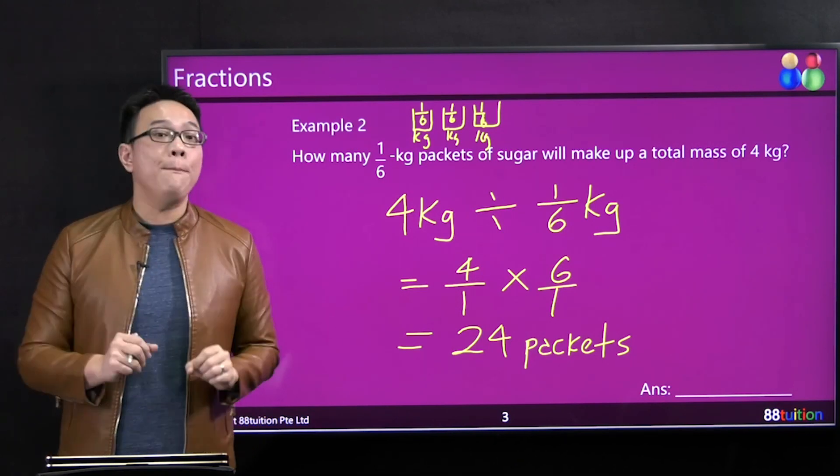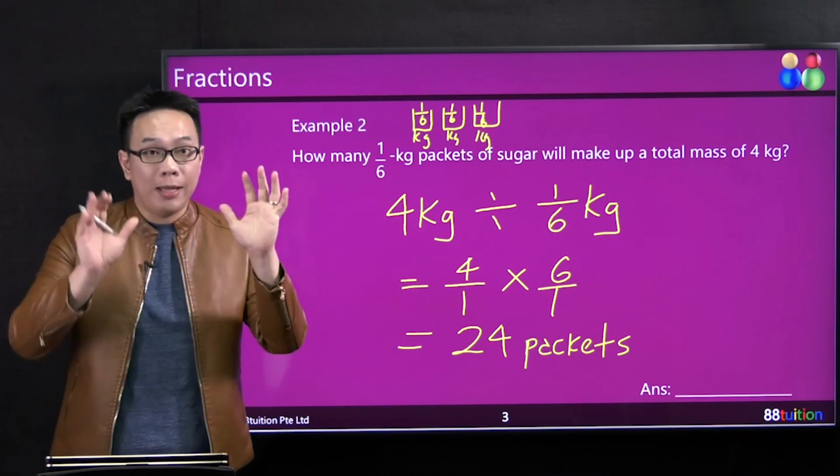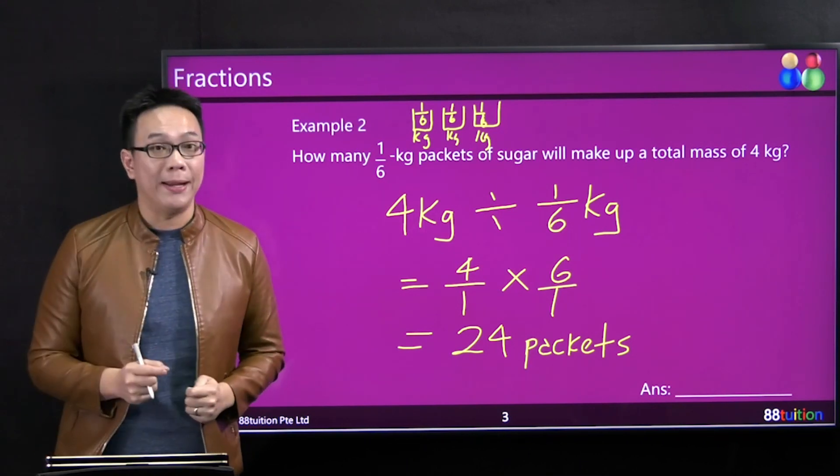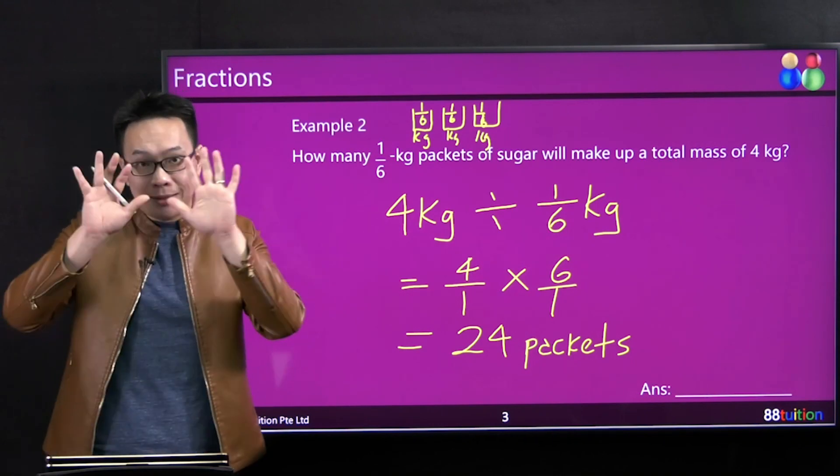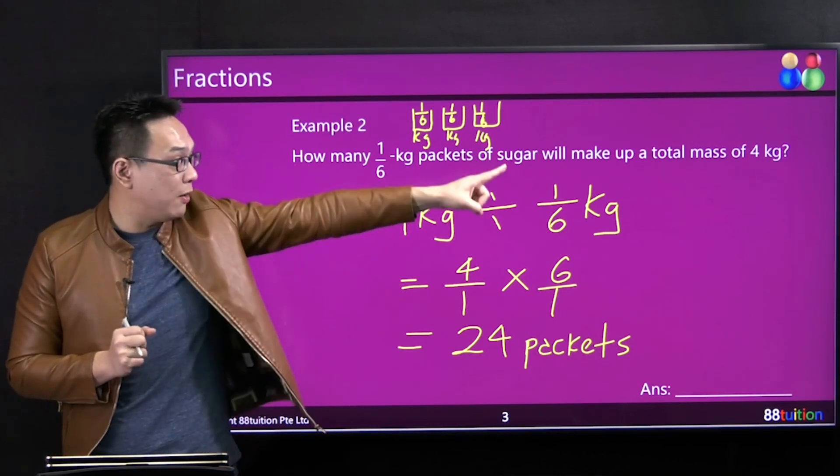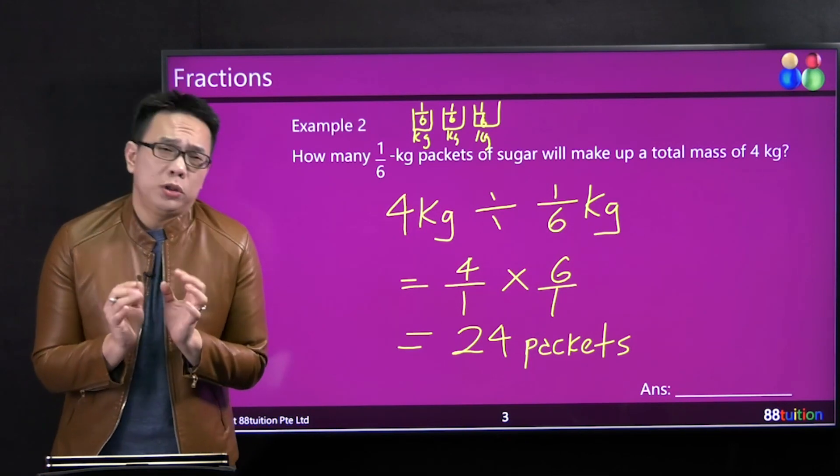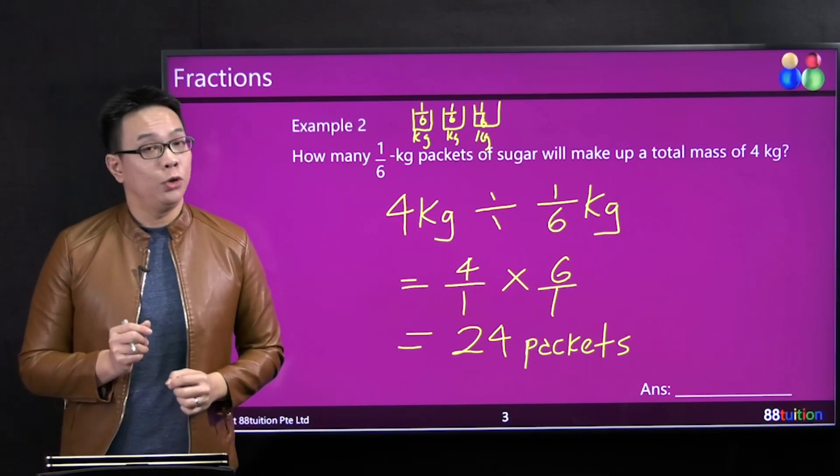One packet has 2 sweets, so 10 sweets divided by 2 sweets per packet gives you 5 packets. Can you see? You take 10 divided by 2, it's the same as taking 4 kg divided by 1/6. But sometimes when there's a fraction involved, you tend to be a little bit frightened.